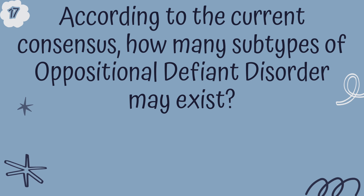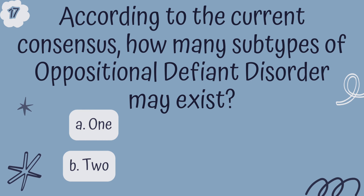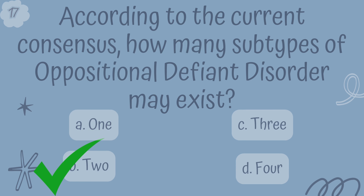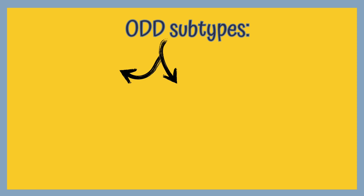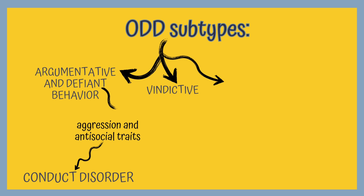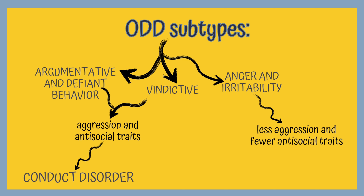Question 17. According to the current consensus, how many subtypes of oppositional defiant disorder may exist? A. 1, B. 2, C. 3, or D. 4? The correct answer is B, 2. There are two subtypes: one more likely to progress to conduct disorder, characterized by aggression and antisocial traits including the vindictive type; and another characterized by less aggression and fewer antisocial traits, less likely to progress to conduct disorder.